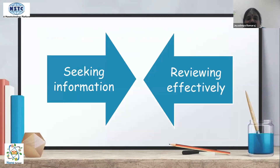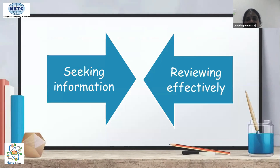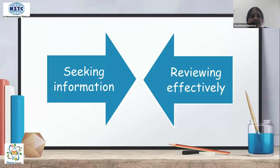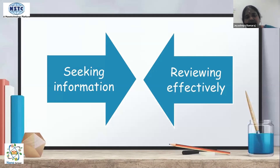Reviewing an article requires two key skills: seeking information skills, and reviewing effectively. A reviewer must first be able to read and understand the article and gain as much information from it as possible. Second, they must know how to review it effectively. These are the skills required when reviewing a published research article.